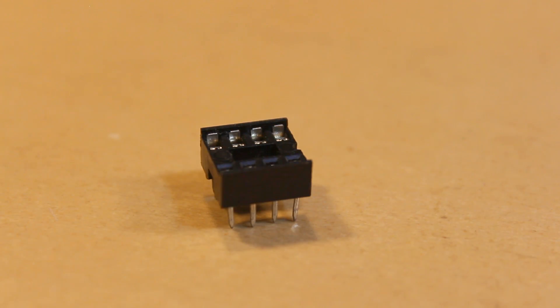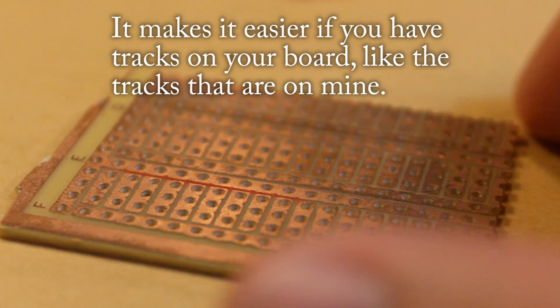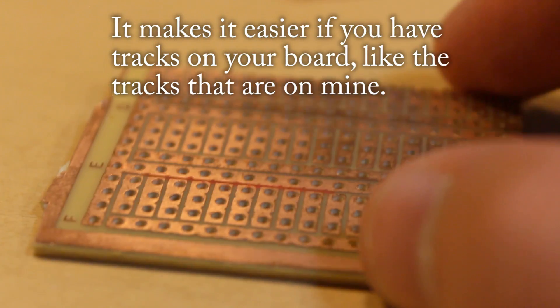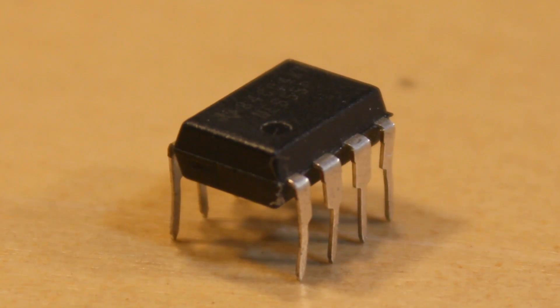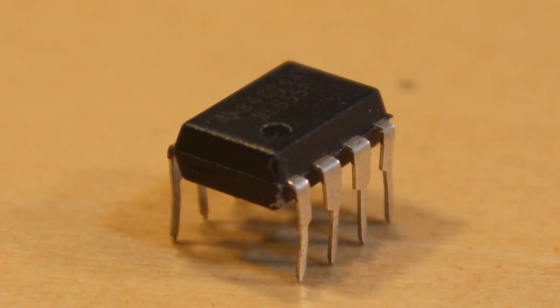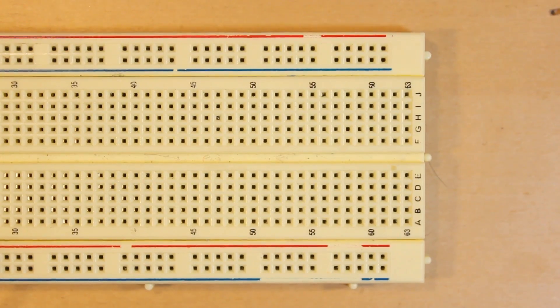Optional is one of these dip sockets to protect the 555 timer. You'll also need a smallish piece of perfboard. Last but not least, you'll need your 555 timer. Okay, let's get started.